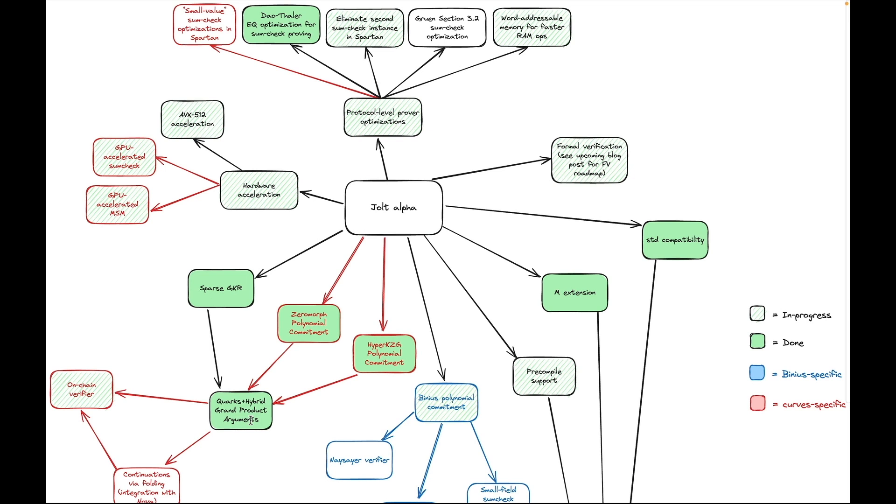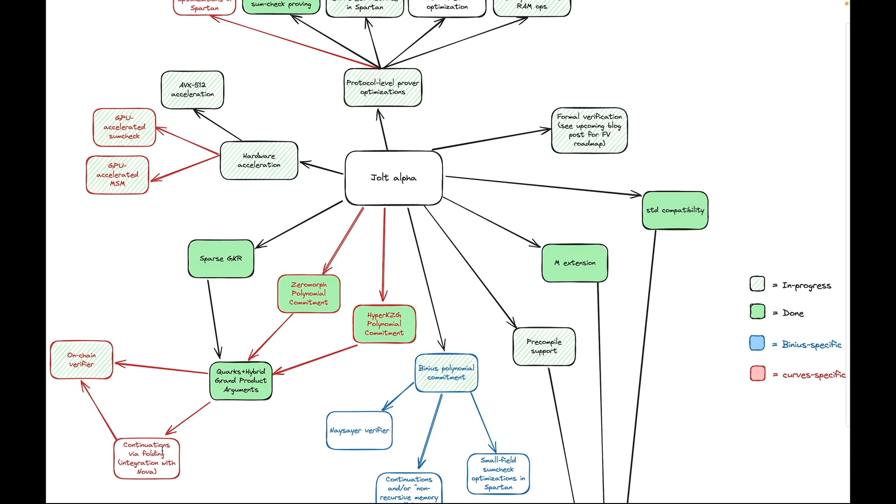A major benefit of achieving these lower verifier costs is it sets us up to address in a very nice and clean way the prover space usage issue. Because Jolt somewhat uniquely amongst ZKVMs today uses elliptic curve commitment schemes, we have access to very efficient techniques for controlling prover memory usage called folding schemes. That is next on the agenda. Once we finish that, I expect that the Jolt prover will use less than two gigabytes of space while retaining its excellent proving time. At that point, the two major issues that have perhaps been standing in the way of wide usage of Jolt will have been addressed, and I expect and hope for a phase change where Jolt starts seeing quite a bit more usage.